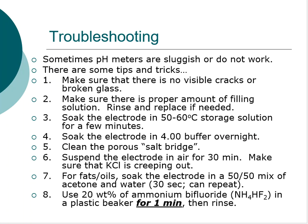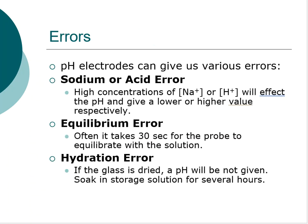In the last video we talked about being up the creek without a paddle, hoping our pH probes could be our paddles in pH theory. Now we need to talk about some extra problems that can happen if we're not careful when using a pH probe. There are three major ones: the sodium or acid error, the equilibrium error, and the hydration error.